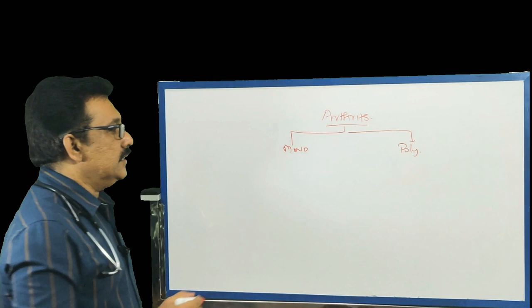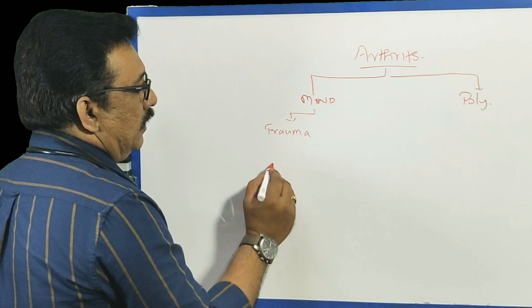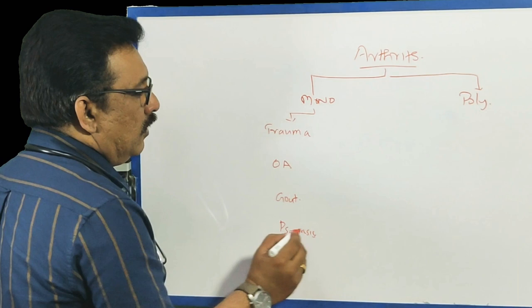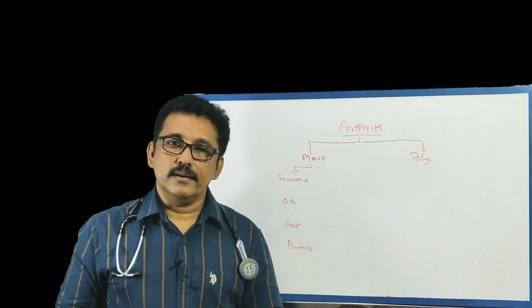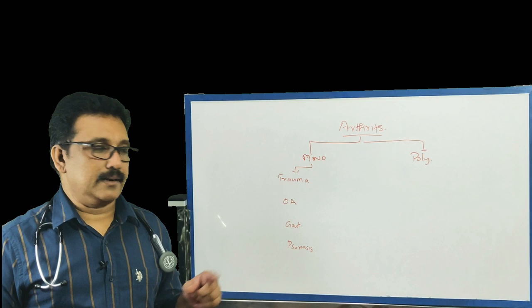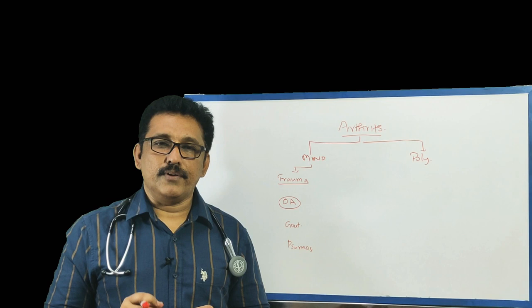We will now see examples of monoarticular involvement. It can be trauma, osteoarthritis, gout, or rarely psoriasis. Trauma means there is a history of an accident or injury to the joint — after the injury, the joint slowly becomes swollen and painful. So trauma can produce monoarticular joint involvement.